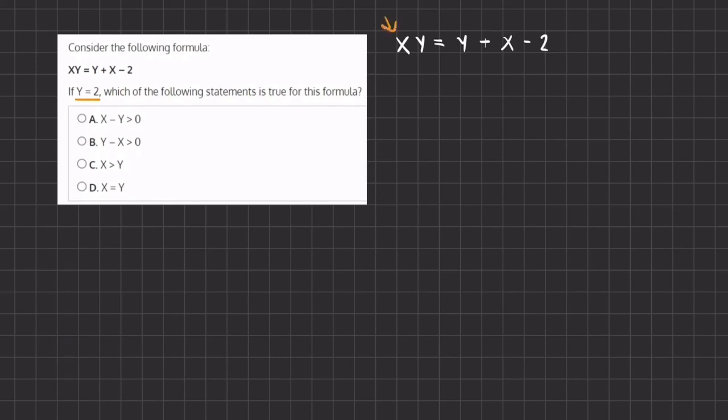I wrote it right over here again and now let's plug in the value of y in order to find the value of x. So we have x times 2, which is y, equals y, which is 2, plus x minus 2. So now let's start simplifying.